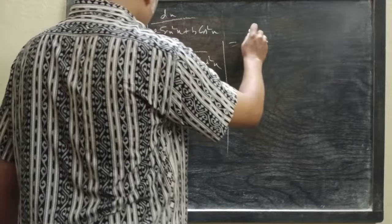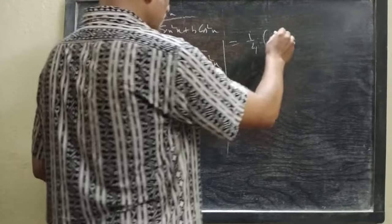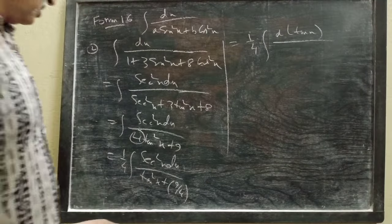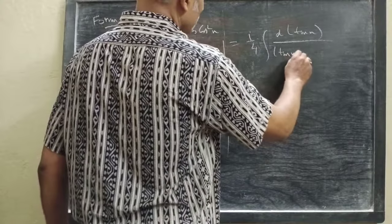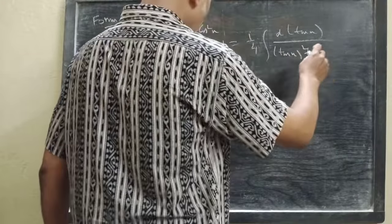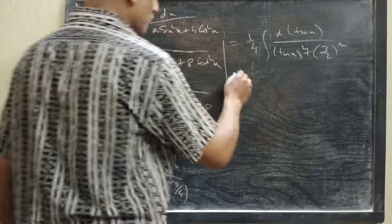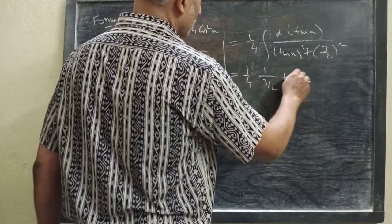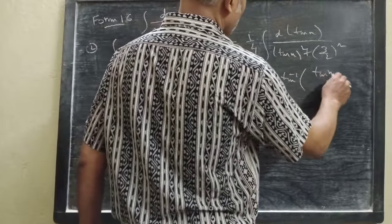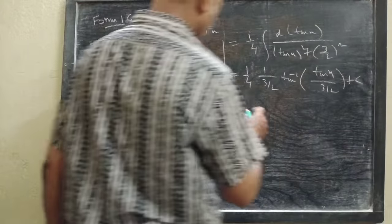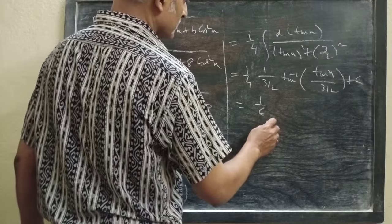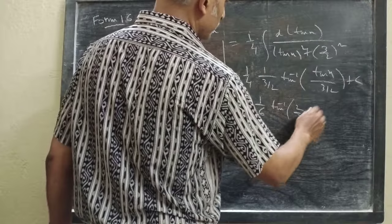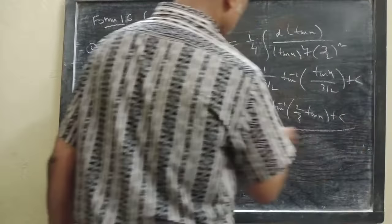Now I can write it as (1/4)·integration of d(tan x) by (tan x)² + (3/2)². So the answer is (1/4)·(1/(3/2))·tan⁻¹(tan x / (3/2)) + c, which simplifies to (1/6)·tan⁻¹(2·tan x / 3) + c. This is the final answer.